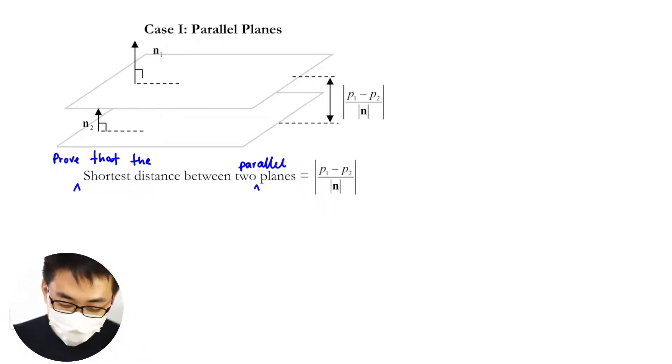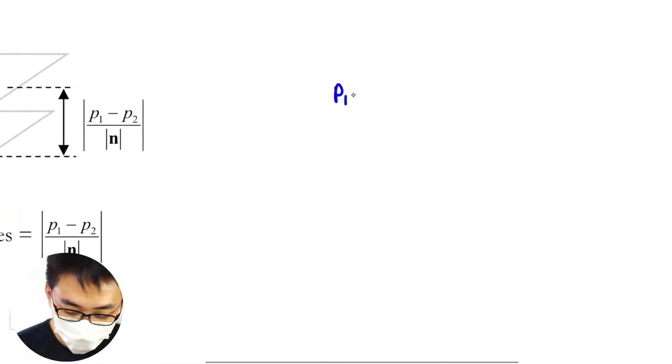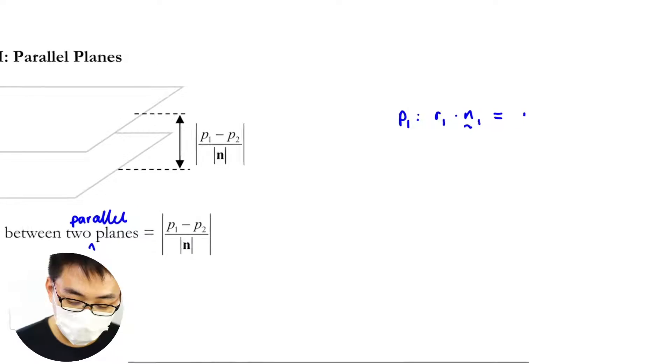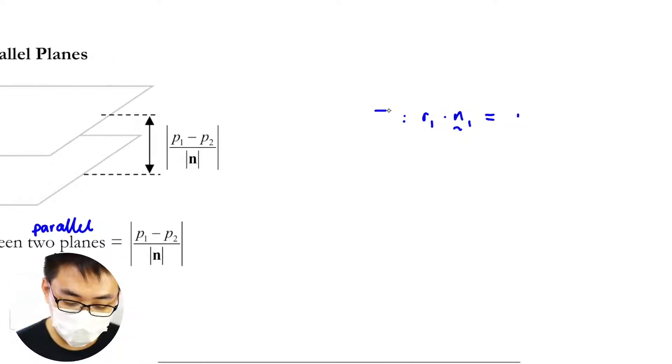So given that if π₁ is r₁·n₁, the normal convention equals to r₁. So this is π, this is maybe I'll use plane one as this one, and π₂ is r₂·n₂, important.